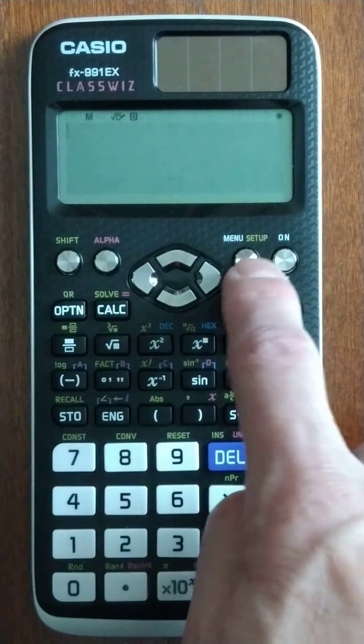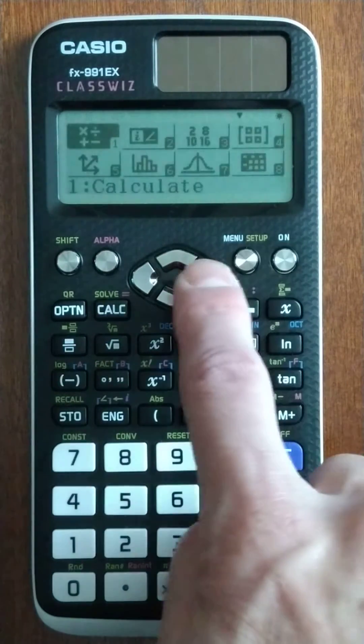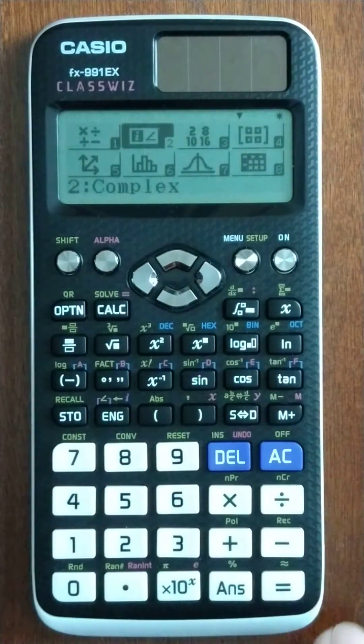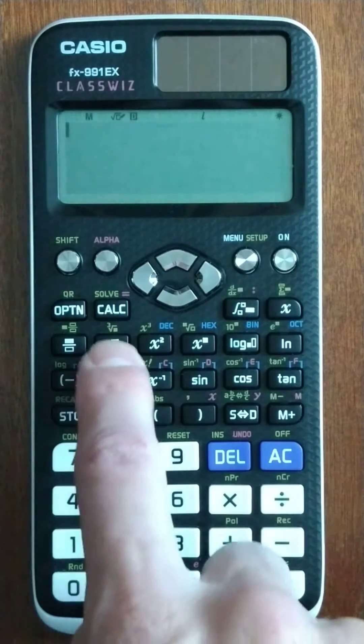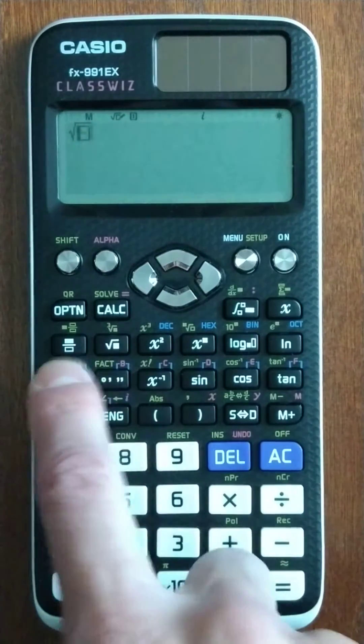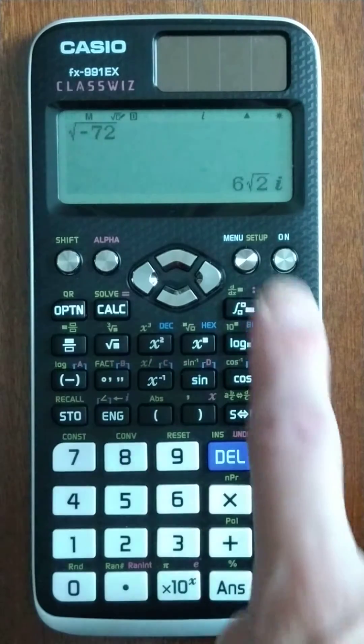Well that's because you can't take the square root of a negative unless you're in the complex mode. So it's a different mode on this calculator. Square root, negative 72, enter, beautiful.